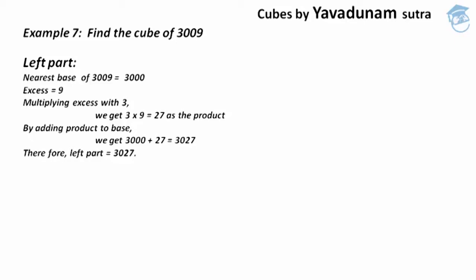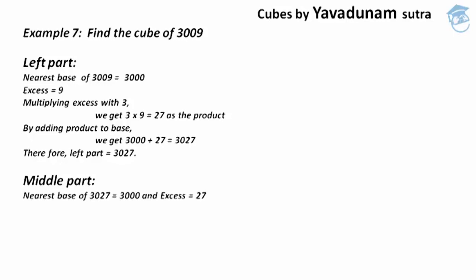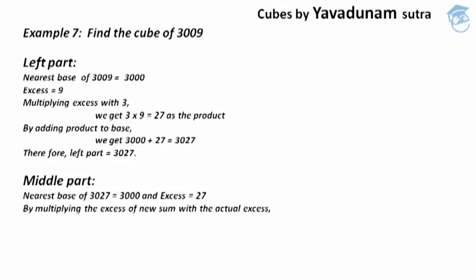After finding the left part, we move to the middle part. Here, we take the answer from the left part, 3027, and find its nearest base and excess. The nearest base is 3000 and the excess is 27. Next, we multiply the excess of the new sum by the actual excess: 27 × 9 = 243. This 243 is the required middle part.